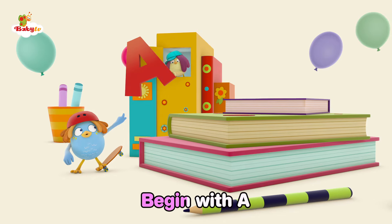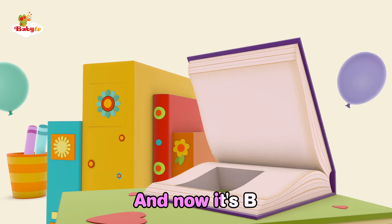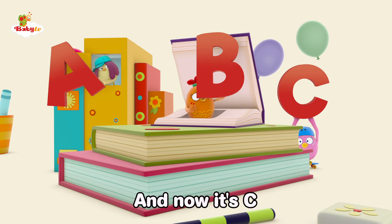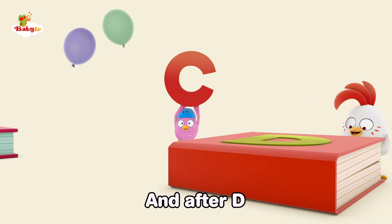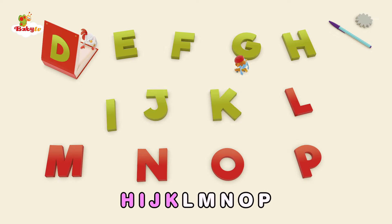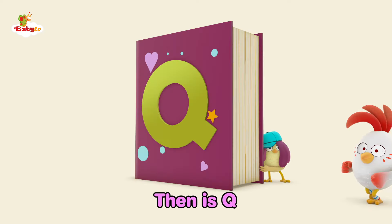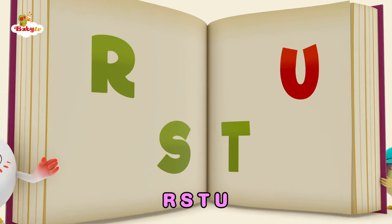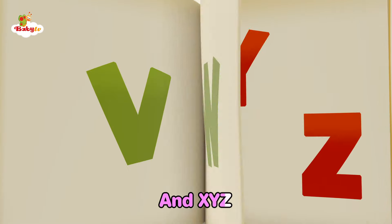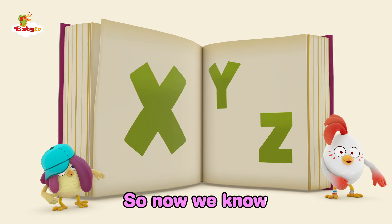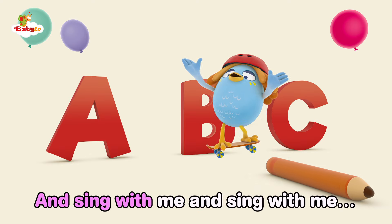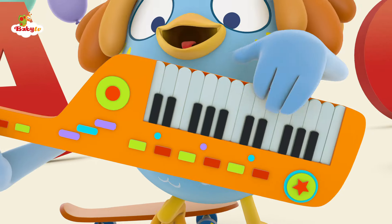Begin with A, and now it's B. Let's sing along the ABCs. And now it's C, and after D. And E F G, H-I-J-K-L-M-N-O-P. Then it's Q, R-S-T-U, V-W, and X-Y-Z. So now we know our ABCs. So come along and sing with me, and sing with me, sing with me!